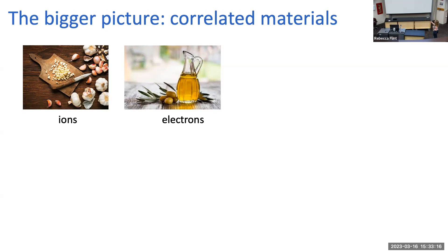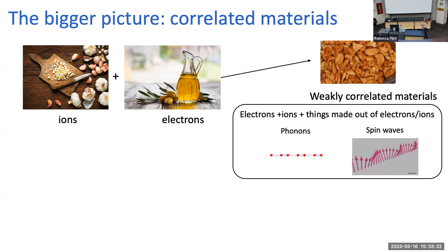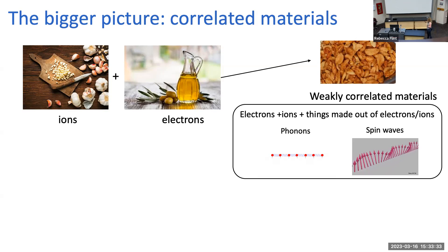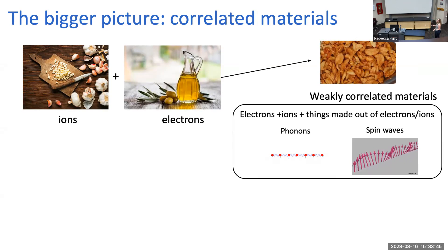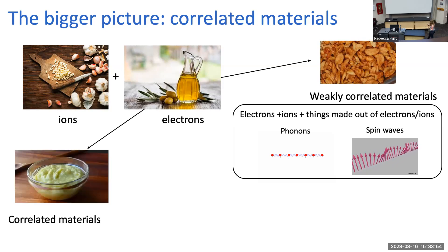In this picture, ions are garlic and electrons are like olive oil. When you add them together you can do lots of things, but some results end up looking like the original ingredients — like garlic fried garlic chips. In my analogy, you add electrons and ions together and they look like electrons and ions. This describes most weakly correlated materials: metals, semiconductors, even superconductors and magnetic orders — they all more or less look like electrons.